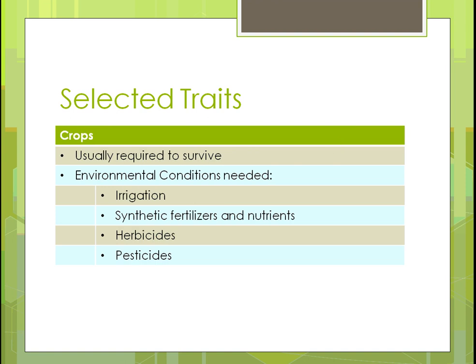For crops to survive today, specific environmental conditions are required. Many vegetable crops need irrigation because they're grown year-round in places like Florida or California where it's warm more of the season. In order to grow, they need synthetic fertilizers and nutrients added manually — these aren't naturally available in the ground. And because disease and insect resistance has been bred out, herbicides and pesticides must be applied to control weeds, pests, and insects.